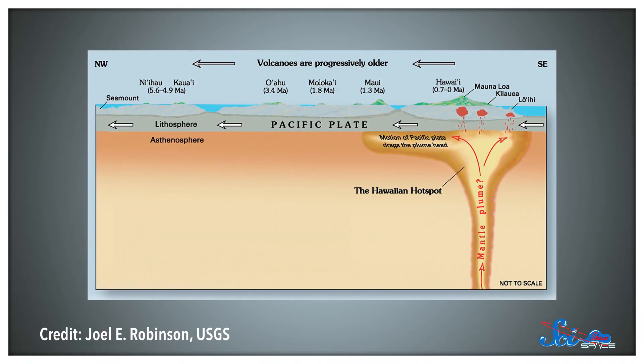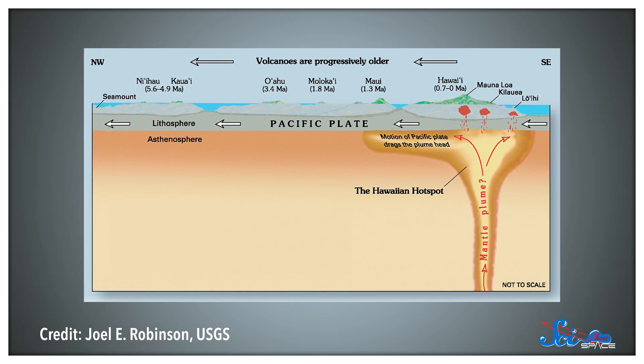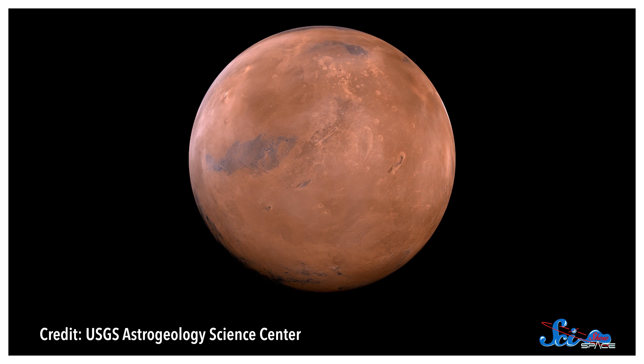On Earth, mantle plumes are thought to be the mechanism that formed Hawaii and the rest of the Emperor chain of islands. And on Mars, this single plume could have been all of the tectonic activity that the cooling Martian core was capable of sustaining, leading to this uneven crust. If true, that could explain a lot, but it still wouldn't explain how the northern plains ended up so smooth.